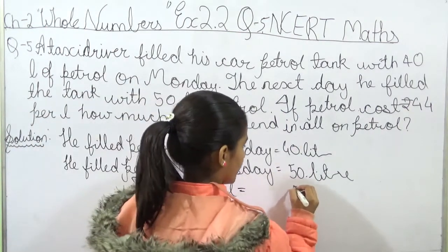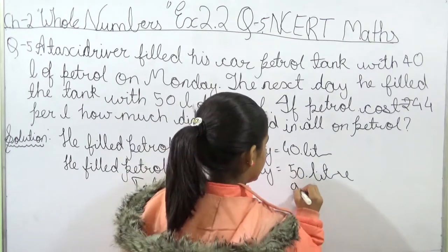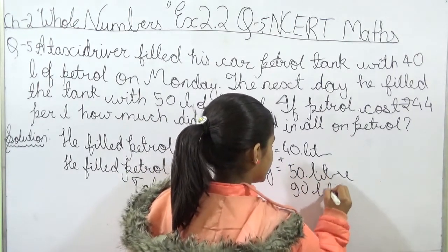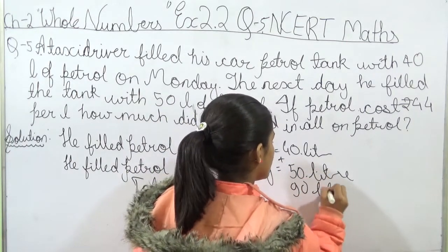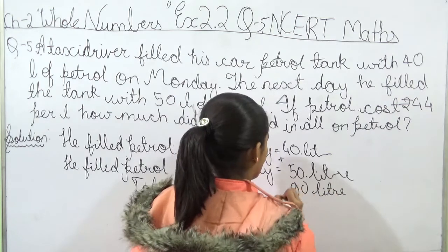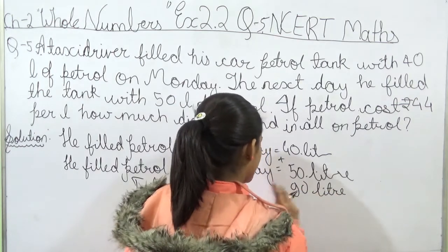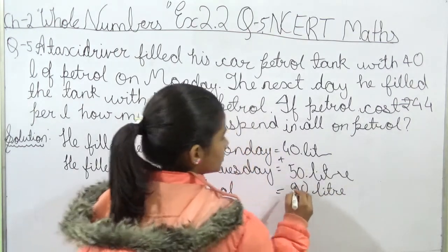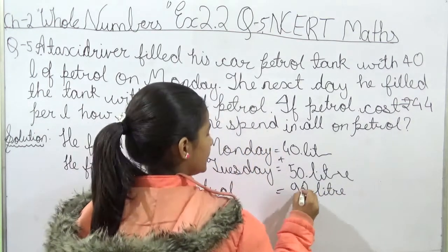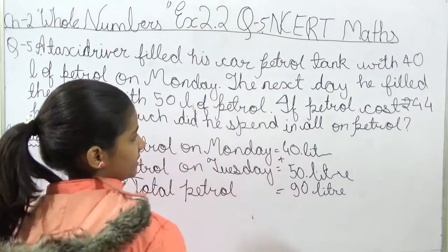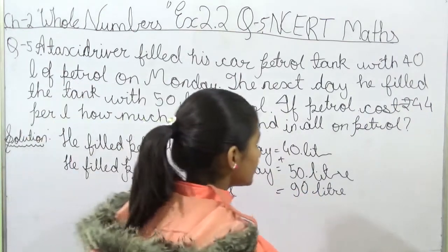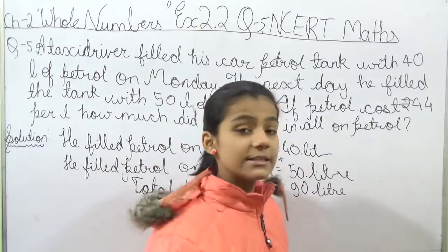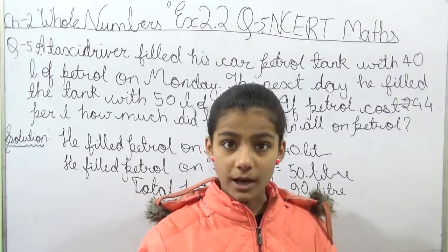So in total, 40 plus 50 gives us 90 liters of petrol filled on both days. Now we have 90 liters of petrol.